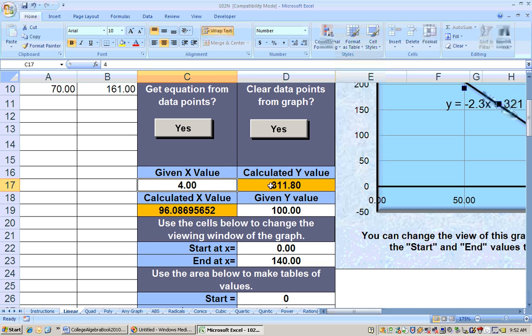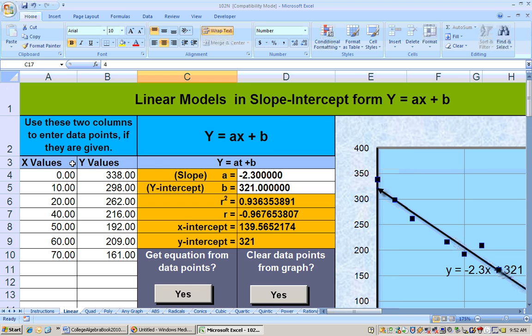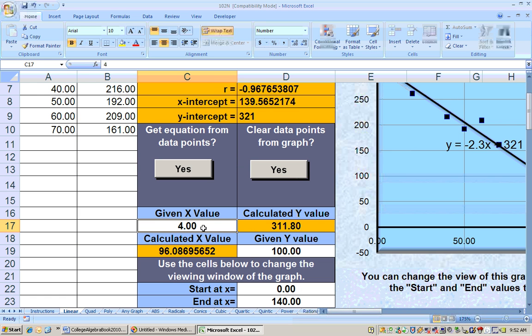You can put in x values here to get a y, like if you wanted to know what's the interpolated. Interpolation means predicting values within the range of your data points. If we put in anything from 0 to 70 in here, it would be interpolation because my data points went from 0 to 70. And if I put anything after 70 in here, that would be extrapolation.